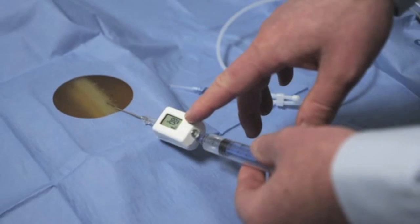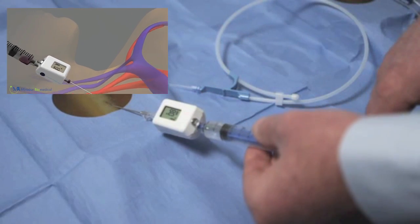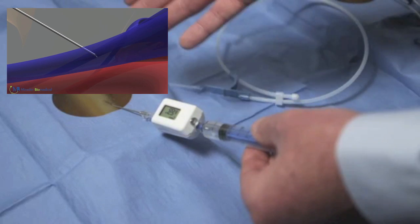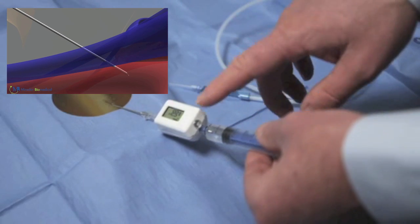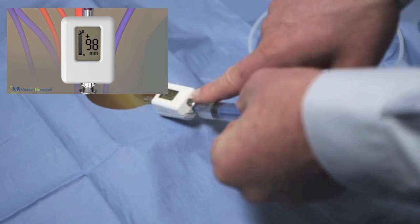So here again we see the needle tip in the venous system, and what we're going to demonstrate here is if the needle was advanced posteriorly through the wall of the venous system into the artery, and here we will see the pressure jump suddenly, displaying the arterial pressure.